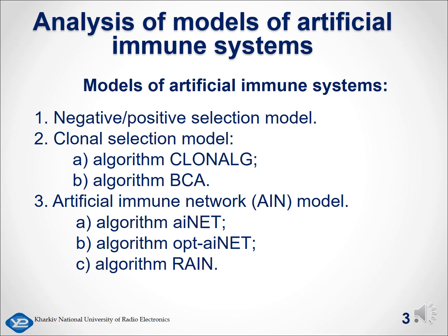Among the immune models, the most promising for practical application is the immune network model, since it involves organizing the interaction not only of antibody and antigen populations, but also the interaction of antibodies within the same population. Existing models of immune networks have a number of disadvantages, the main of which are low speed and relatively low accuracy, which manifests itself, for example, in solving problems of classification, clustering, and pattern recognition.